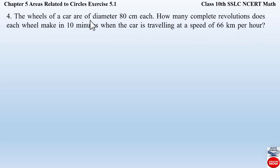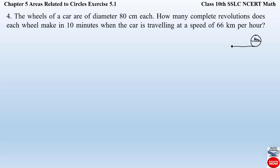Let us understand the question. The wheel of the car has a diameter of 80 centimeters. We have to find out how many complete revolutions each wheel makes. For example, consider this as the wheel of the car whose diameter is 80 centimeters. We have to find how many times this wheel rotates to move on a road at the speed of 66 kilometers per hour in 10 minutes of time.